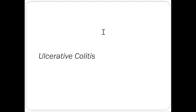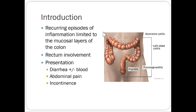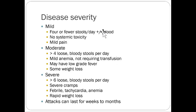Switching to ulcerative colitis: UC involves recurring episodes of inflammation limited to the mucosal layers of the colon with rectal involvement, similar in symptom profile to Crohn's. Disease severity is classified as mild, moderate, or severe, depending on the number of loose stools, amount of blood in stools, and degree of systemic toxicity.